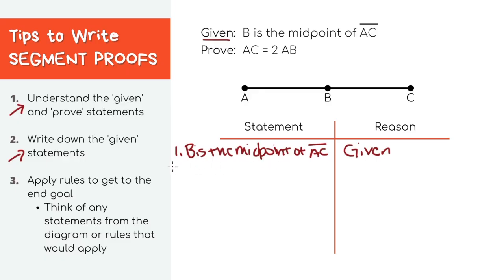For the next step, like we said earlier, because B is the midpoint of this line segment, it's fair to say that the segment AB is congruent to the other half of the segment BC. And that's just the definition of a midpoint.